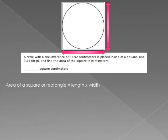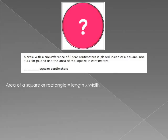If we're talking about a square, the length and the width are the same thing. But we're not given the length or the width for the square, even though they're the same thing. We're actually given something completely different — we're given the circumference of a circle. Well, what does the circle have to do with the square?